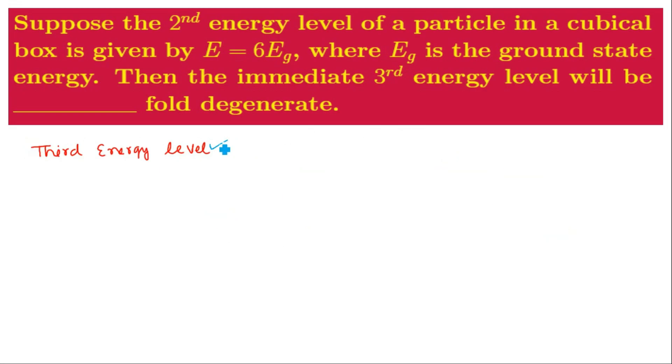The third energy level is the immediate next level to the second energy level, and this is possible where two of the quantum numbers are 2 and only one quantum number is 1. And these are the possibilities: either you can have NX and NY 2 and NZ 1, or you can have NX and NZ 2 and NY is 1,